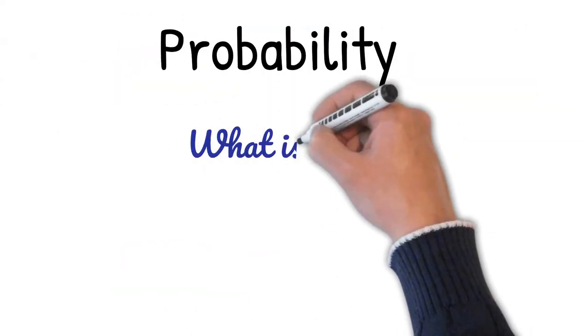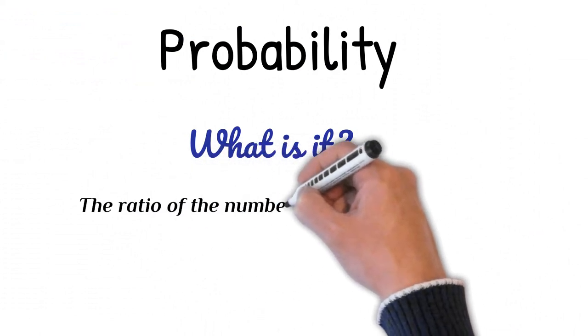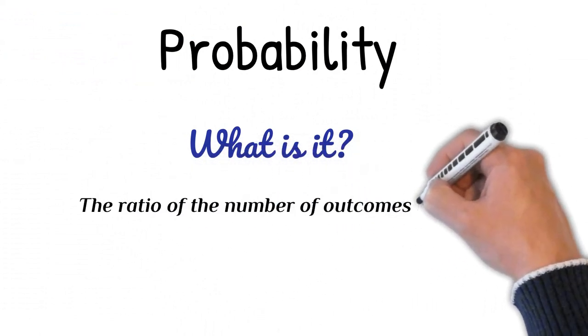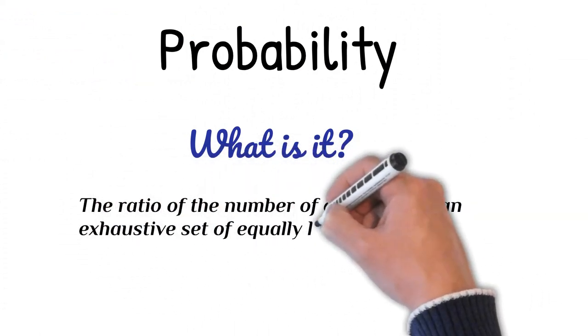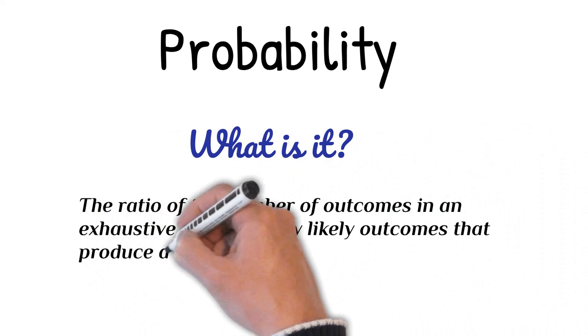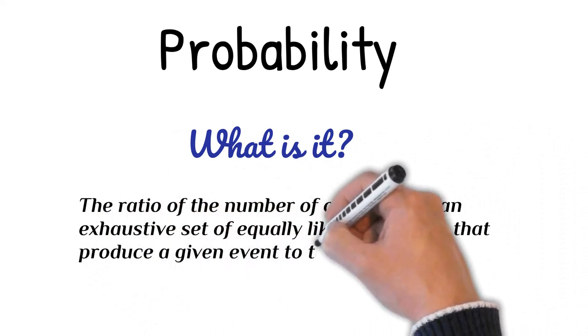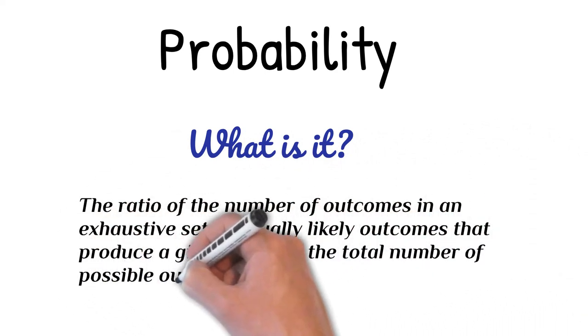What is it? Probability is the ratio of the number of outcomes in an exhaustive set of equally likely outcomes that produce a given event, to the total number of possible outcomes.